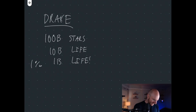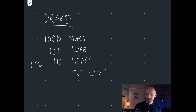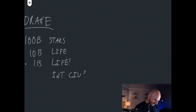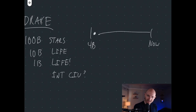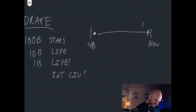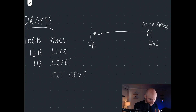What percentage of those stars with life actually produce intelligence — an intelligent civilization? Looking at Earth, life started almost immediately after Earth was created about 4 billion years ago, so it's kind of easy to produce life. But intelligence only came at the very, very end — we only got Homo sapiens much, much later. So we think it's a lot harder to produce an intelligent civilization than it is to produce life.